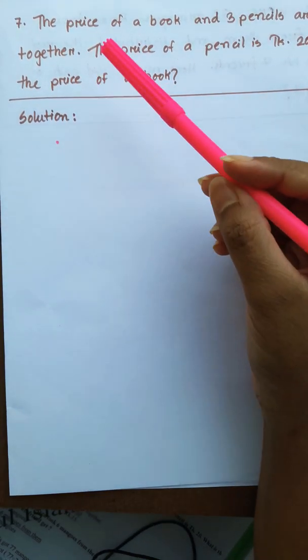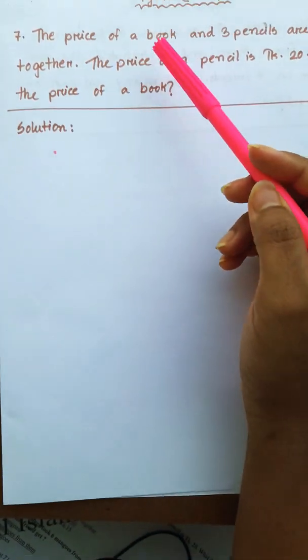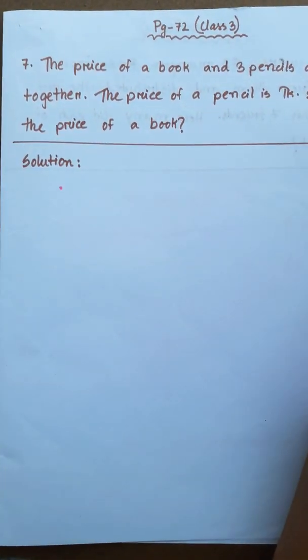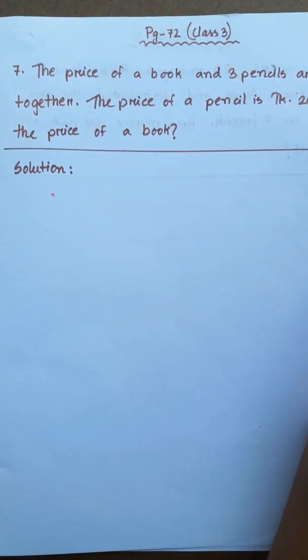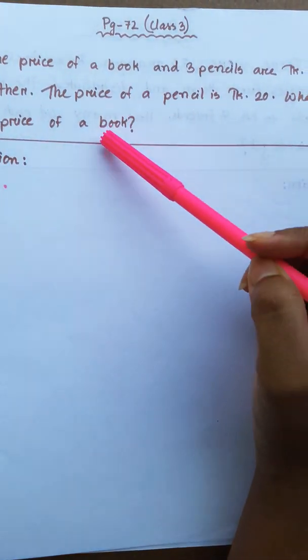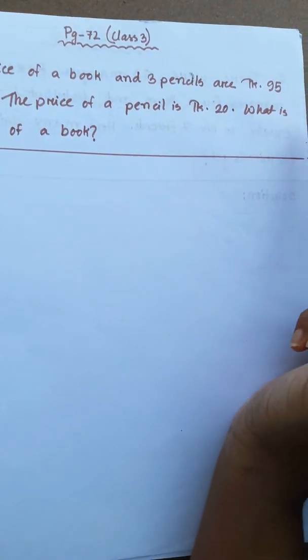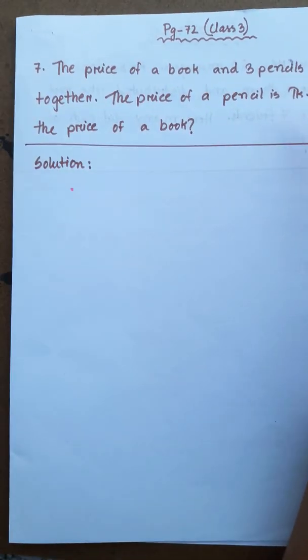On the next question, number 7: The price of 1 book and 3 pencils together is $95. The price of a pencil is $20. What is the price of the book?